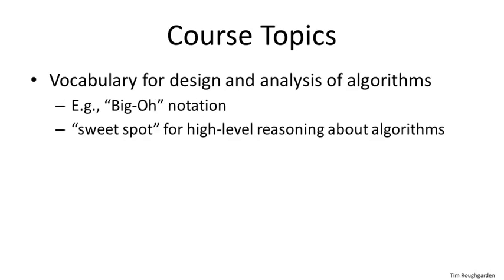The first topic is the shortest, and probably also the driest, but it's a prerequisite for thinking seriously about the design and analysis of algorithms. The key concept here is Big O notation, which, conceptually, is a modeling choice about the granularity with which we measure a performance metric like the running time of an algorithm. It turns out that the sweet spot is to ignore constant factors in lower-order terms and concentrate on how well algorithm performance scales with large input sizes. Big O notation is the way to mathematicize this sweet spot.